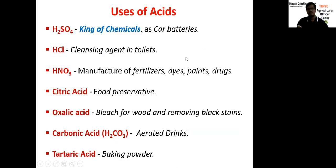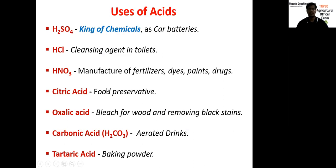Uses of acids: sulfuric acid, H2SO4, is commonly known as the 'king of chemicals' because it is used in the majority of industries. It is used in the automobile industry — that is, car batteries, lorry batteries, or bus batteries. Hydrochloric acid is used as a cleansing agent in toilet cleaners. Nitric acid, HNO3, is used in the manufacture of fertilizers, dyes, paints, and drugs. Citric acid is used as a food preservative. Oxalic acid is used for bleaching wood and removing black stains. Carbonic acid is used in aerated drinks — 7-Up, Pepsi, Coke — and all cool drinks contain carbonic acid.